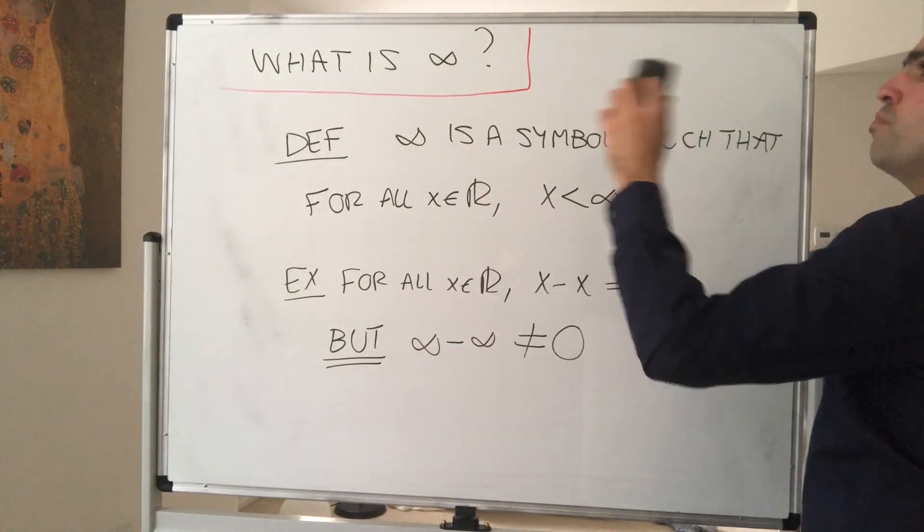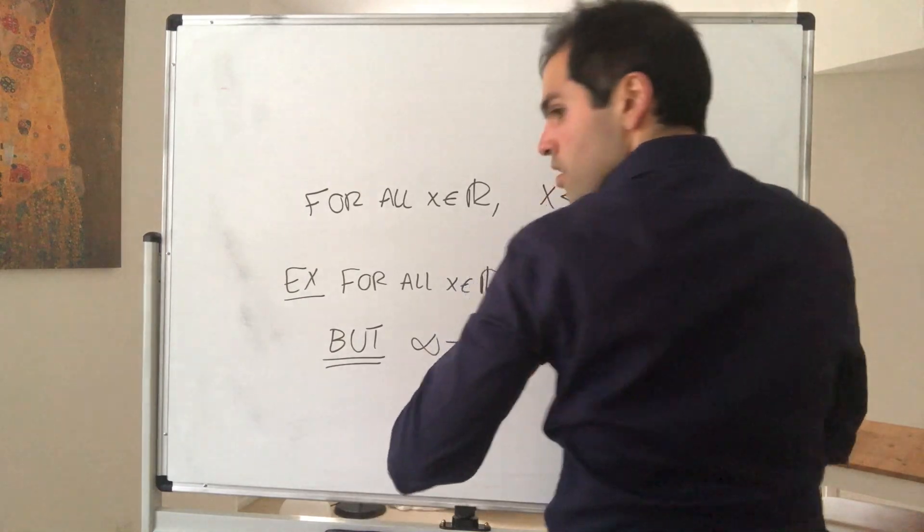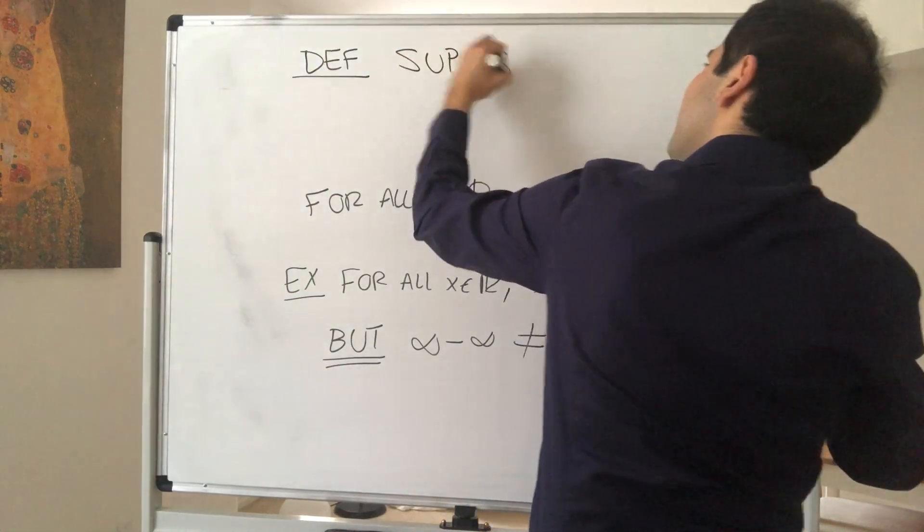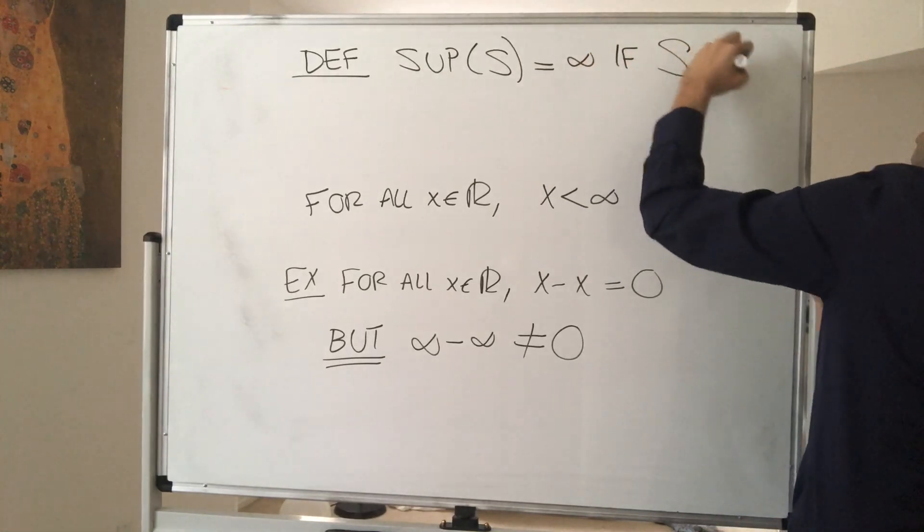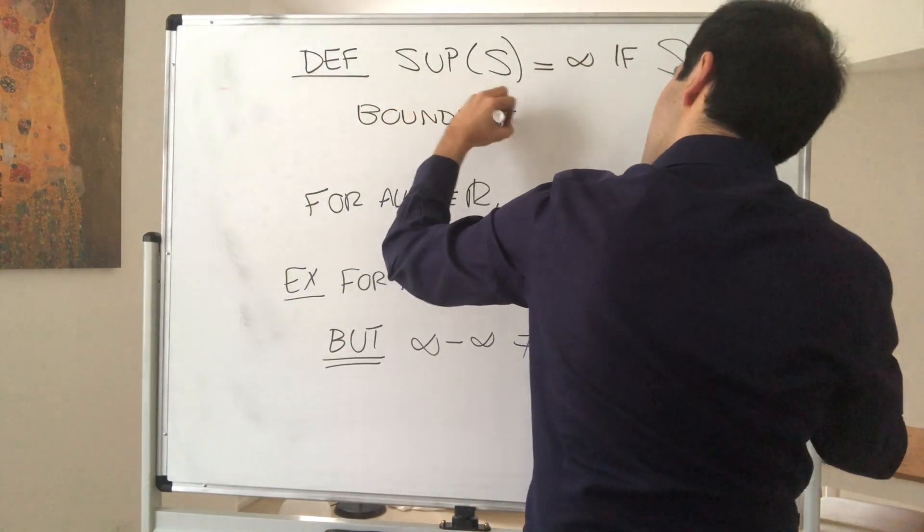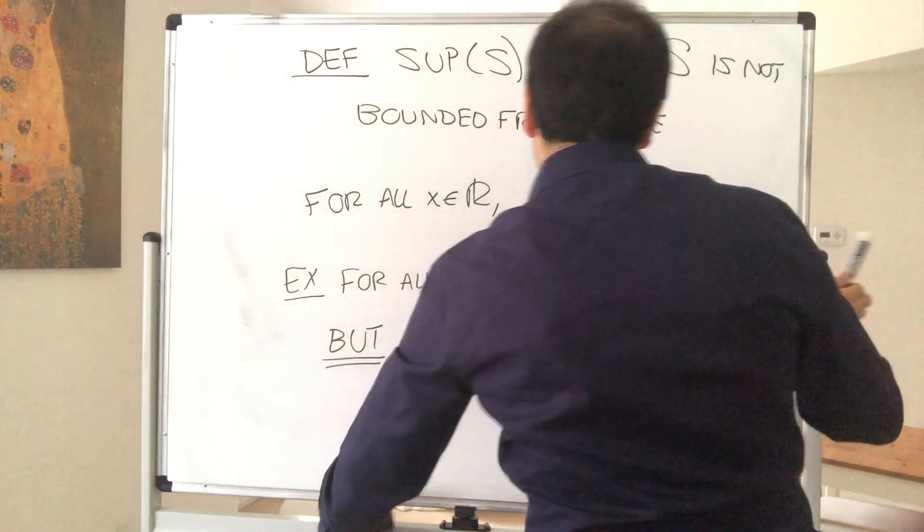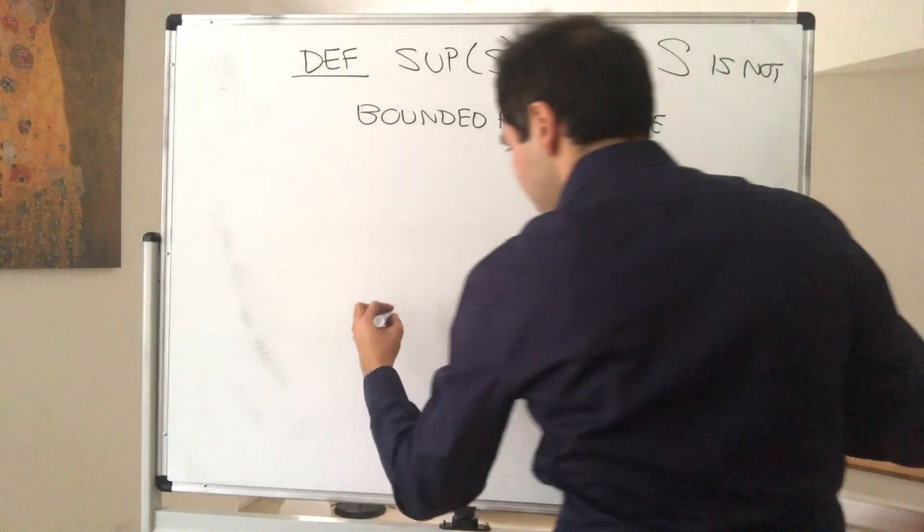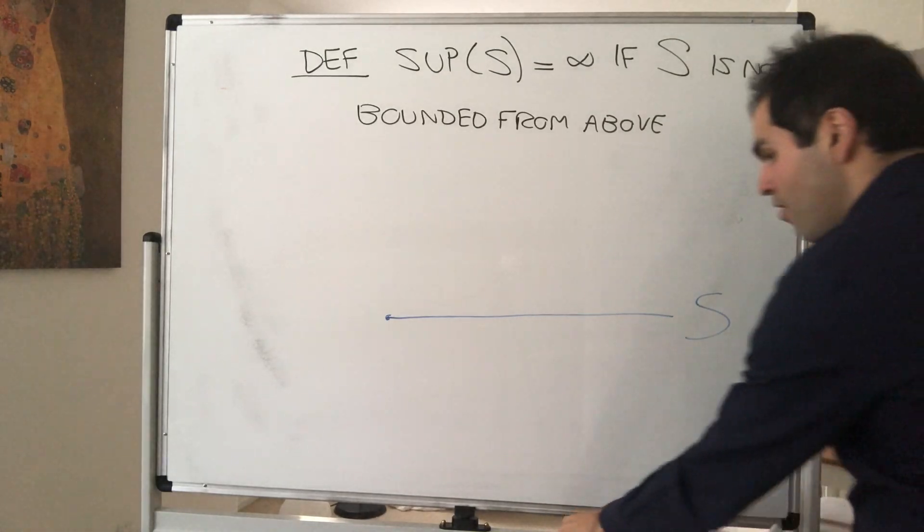So using infinity, we can define what it means for sup of S to be infinite. So, definition, we say the sup of S is infinite simply if S is not bounded from above. What does that mean? Again, just in mathematical terms, suppose you have this huge set S, maybe like this. Not bounded from above means the following.